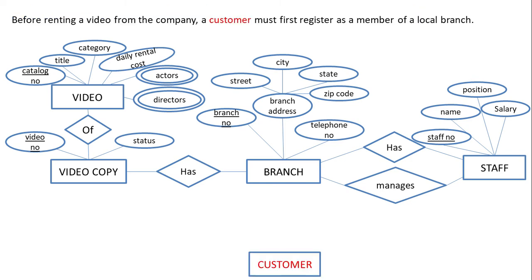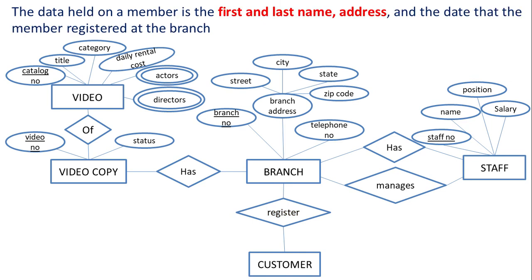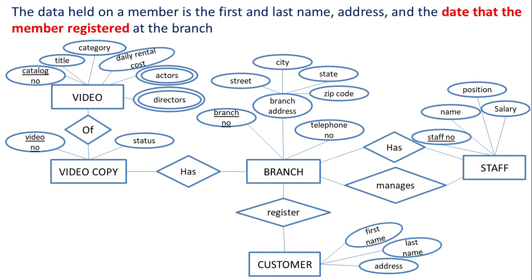Before hiring a video from the company, a customer must first register as a member of a local branch. Customer is an entity, and there is a relationship between customer and branch — 'customer registers as a member of a branch.' The data held on a member is the first and last name, address, and the date that the member registered at the branch. First name, last name, and address are attributes of the entity customer. Date is an attribute of the relationship between customer and branch, because it is the date on which the customer registers as a member of a particular branch.